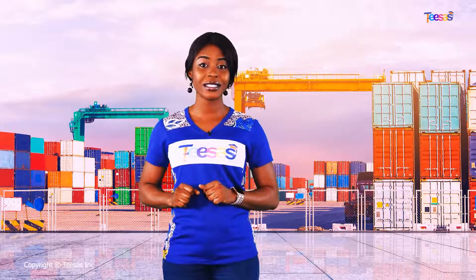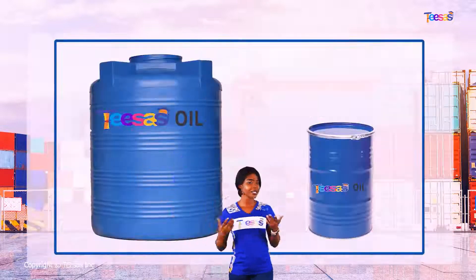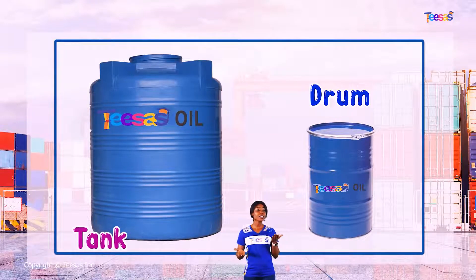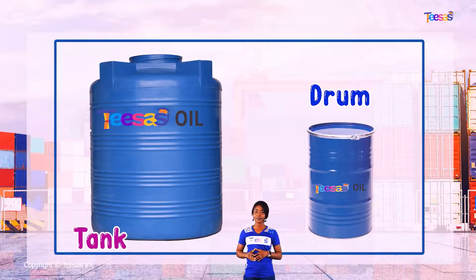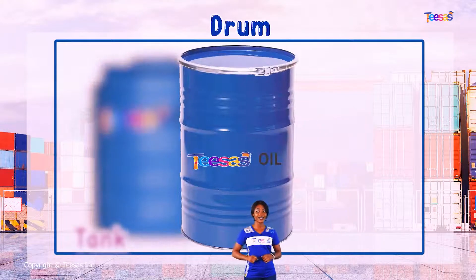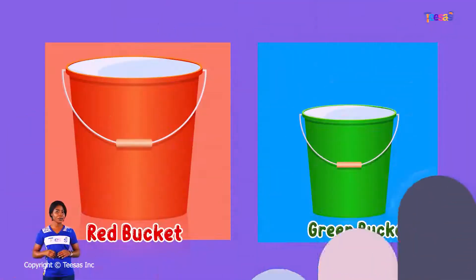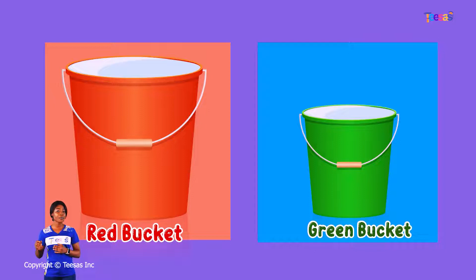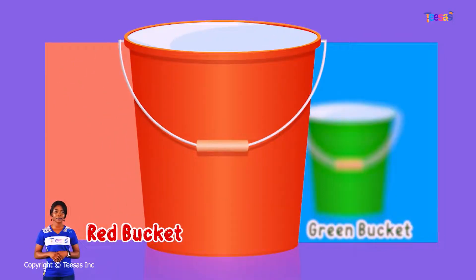Now, phonematicians, you try this. Tell me, which of these containers will contain less oil when full? You're right — it's the drum. Also, which of these buckets has the larger capacity? That's great. You're correct — it's the red bucket.